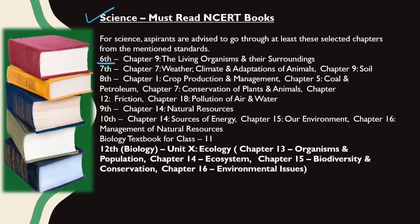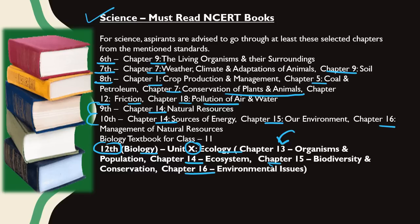For science: Class 6 chapter 9, Class 7 chapters 7 and 9, Class 8 chapters 1, 5, 7, 12, and 18 covering crop production, coal and petroleum, conservation, friction, and pollution. Class 9 chapter 14, Class 10 chapters 14, 15, and 16. Then class 12 biology Unit 10 Ecology, chapters 13, 14, 15, and 16 only. So I have filtered the NCERT for you. You can go through only these chapters for your preliminary examination.